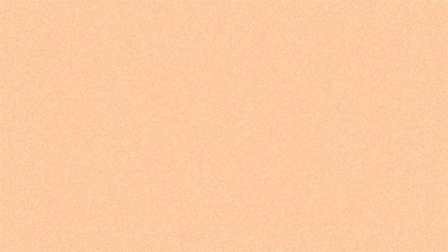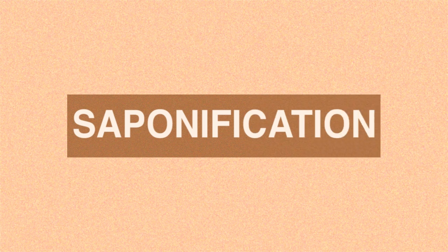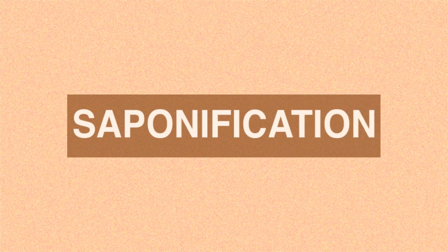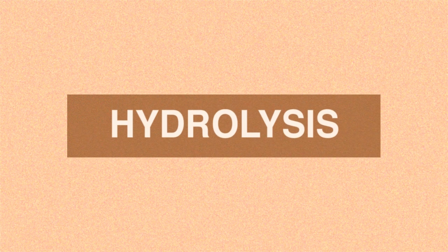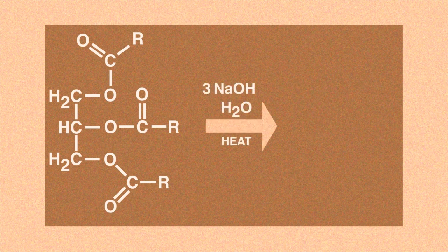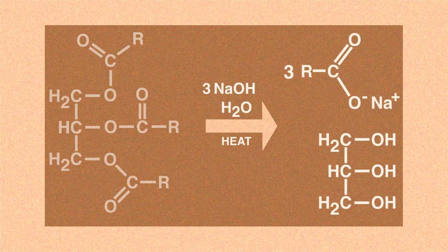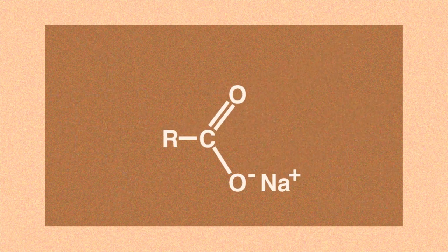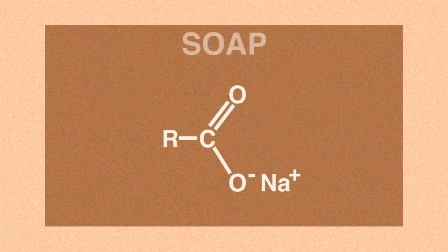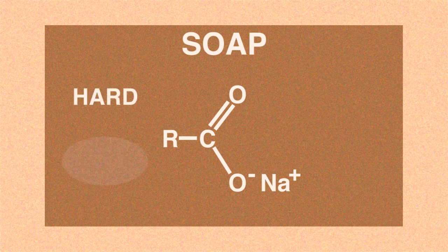In summary, soaps are made by a process called saponification. Really, this is a hydrolysis reaction whereby a fatty acid ester bond is broken and a carboxylate salt and glycerine are formed. That carboxylate salt is the soap that we use when we wash, and can be hard as in a bar of soap or soft like that found in a hand wash.